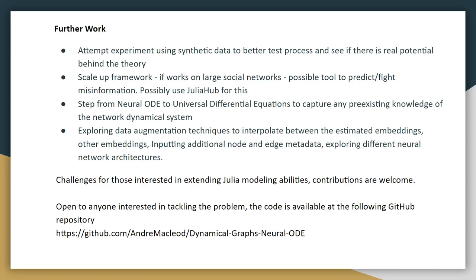So how to fix this? Well, we could try and experiment using synthetic data to better test this process, right? So if we know that the data itself is a network which is actually modeled by a dynamical function, then we can see if this particular type of modeling actually is able to extract those functions, and there you would see there's potential to this theory. If there is, then you could scale up the framework to try and use it on large, real world, like for example, social networks, as a possible tool to fight disinformation, for example. Perhaps you could use JuliaHub for this as a different option.